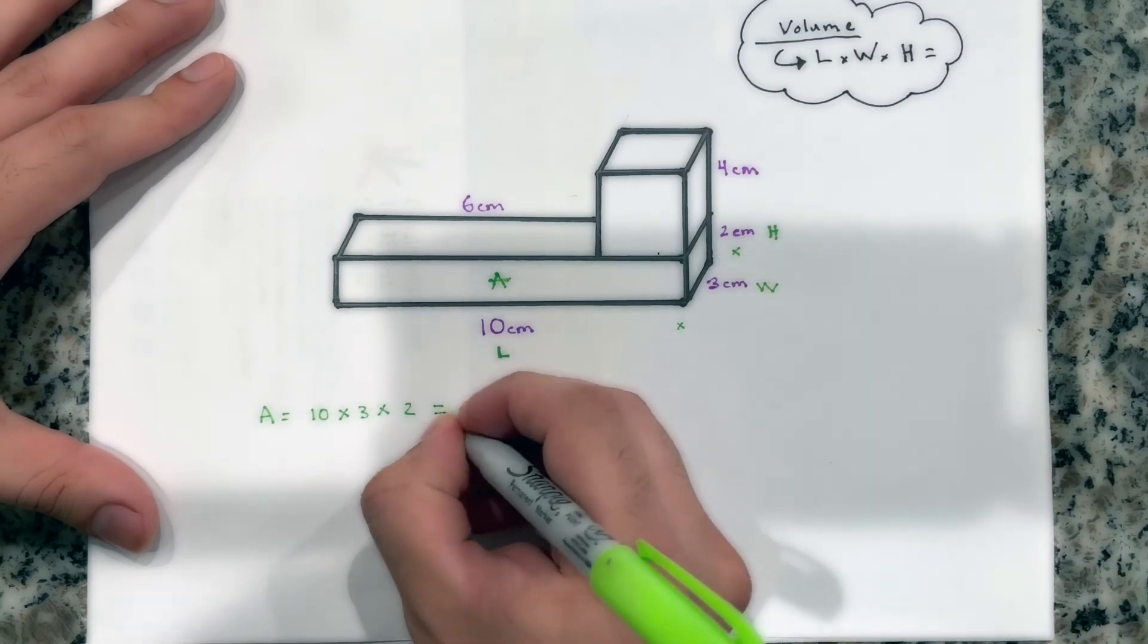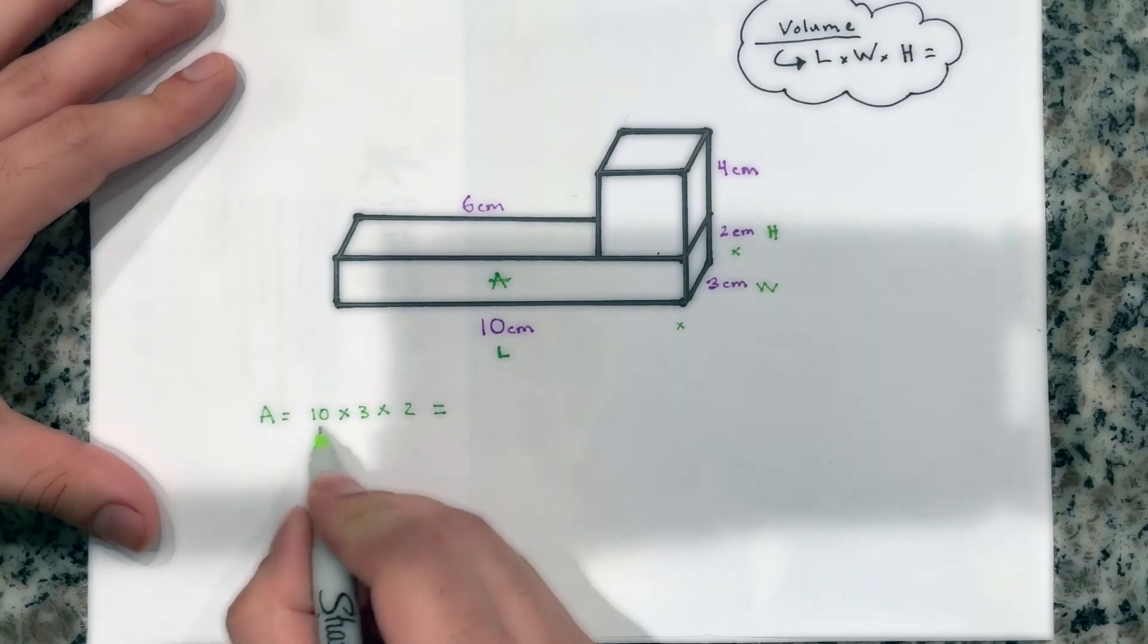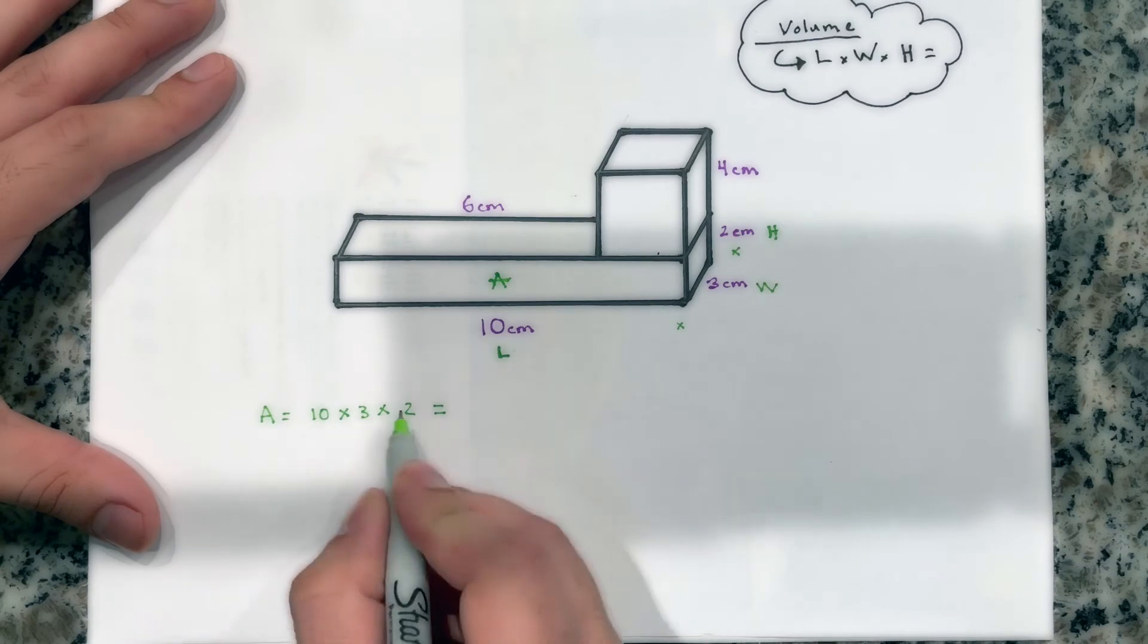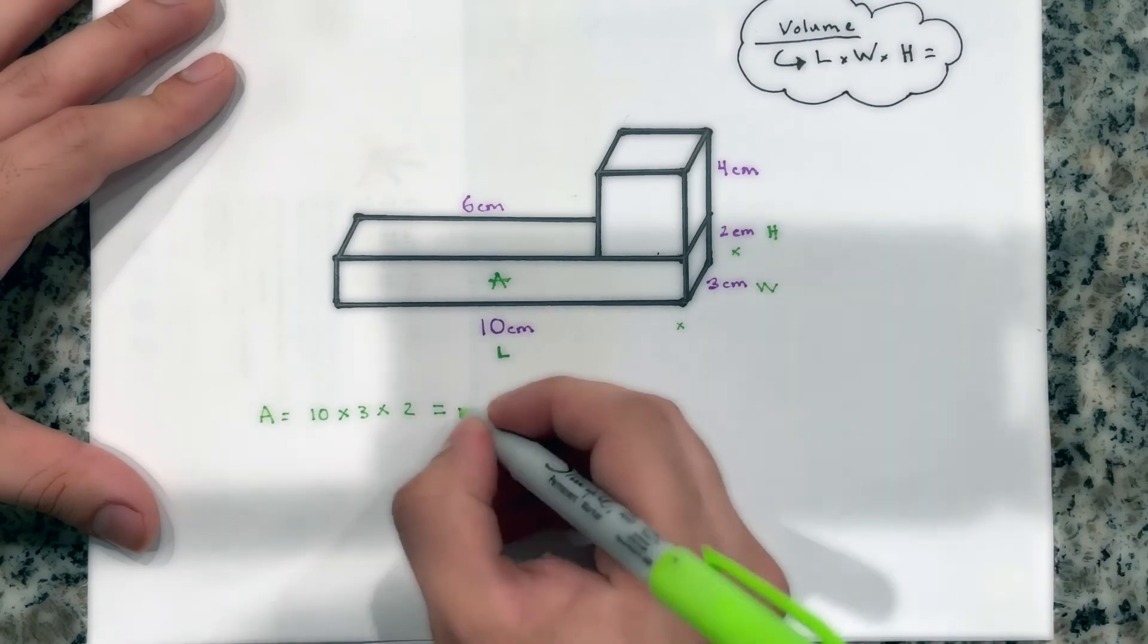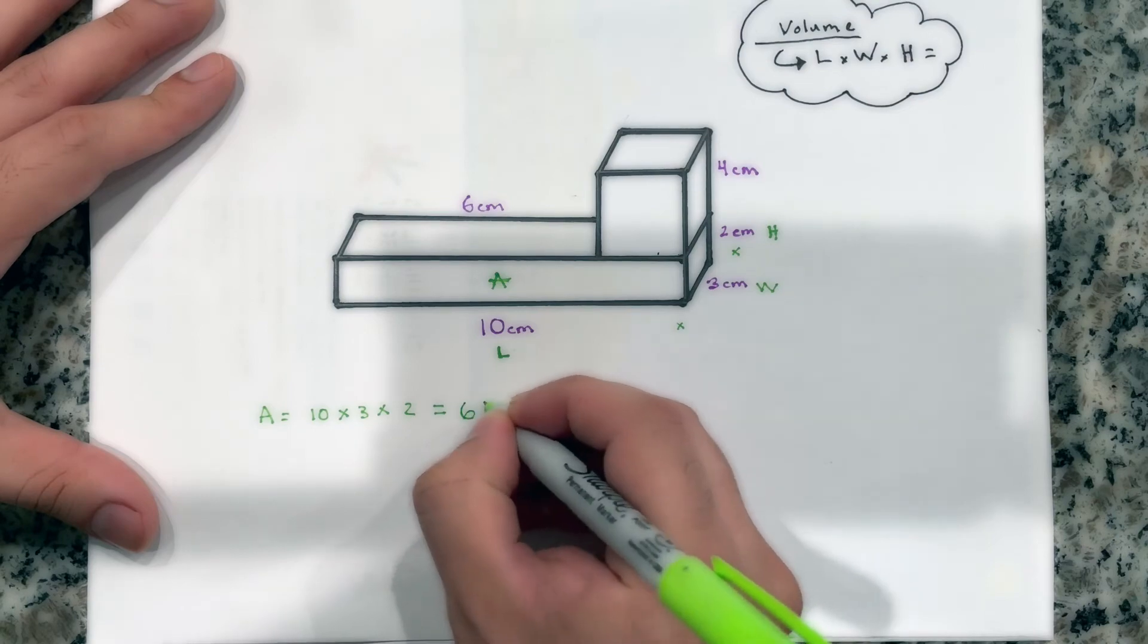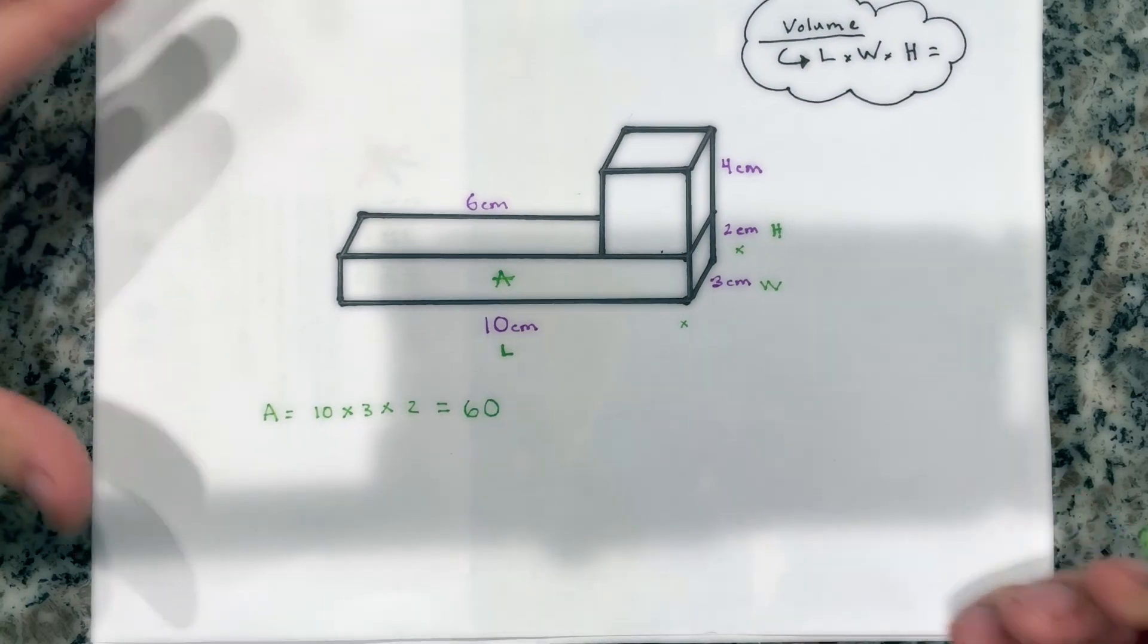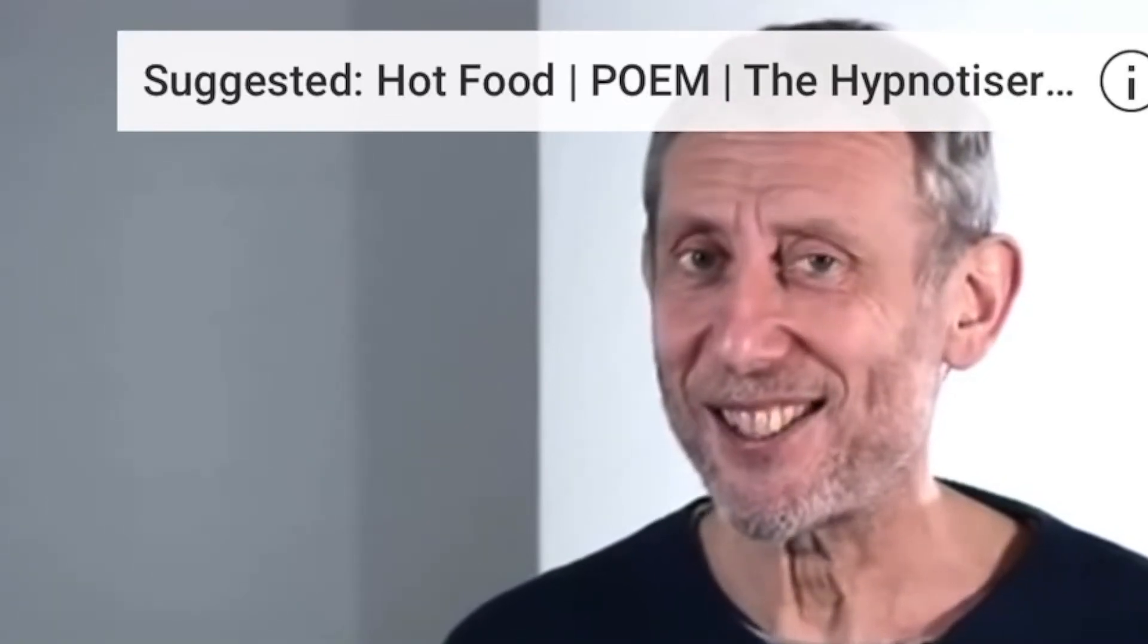Now, if we multiply all those up, I know that 10 times 3 is 30. 30 times 2 is 60. Well, you're a genius. Nice. Cool.